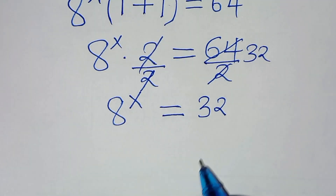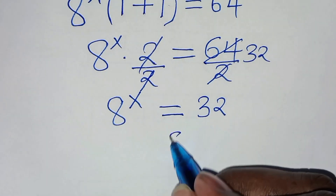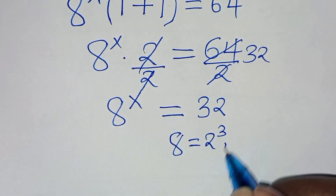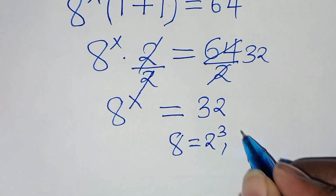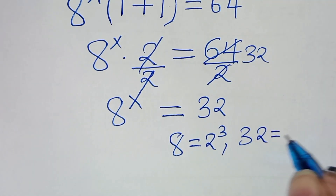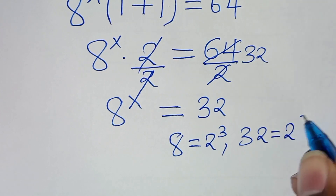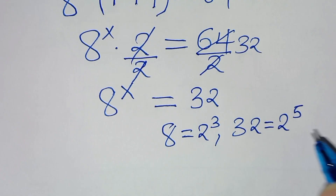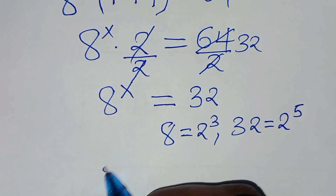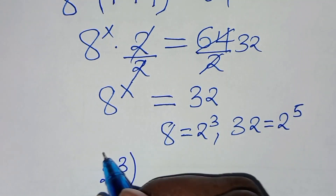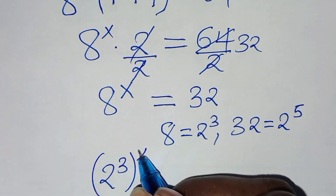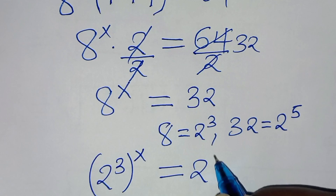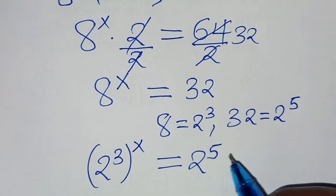The next step is that we can express 8 as 2 to the power of 3, and we can express 32 as 2 to the power of 5. So let's substitute this: we have 2 to the power of 3, raised to the power of x, this is equal to 2 to the power of 5.